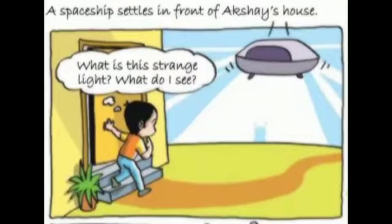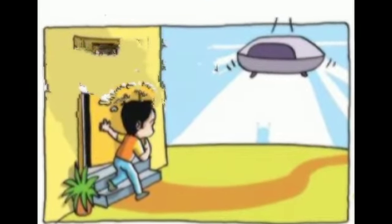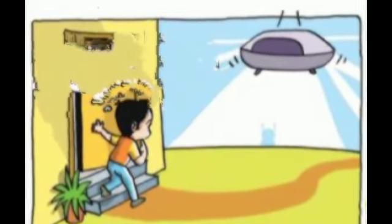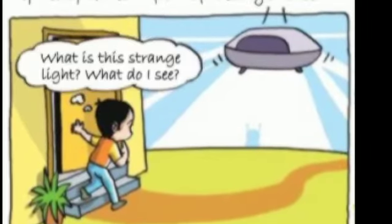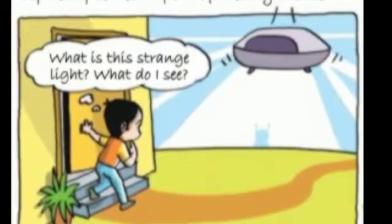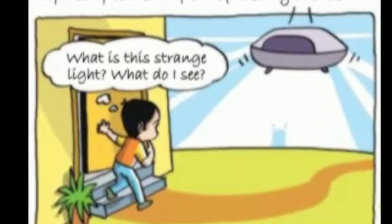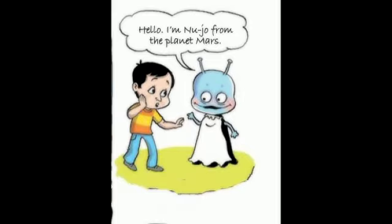A spaceship settles in front of Akshay's house. Akshay is surprised to see it and thinks: what is this strange light? He sees someone coming out of the spaceship. The visitor introduces himself and says hello.